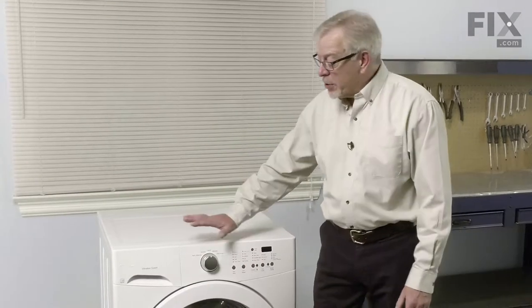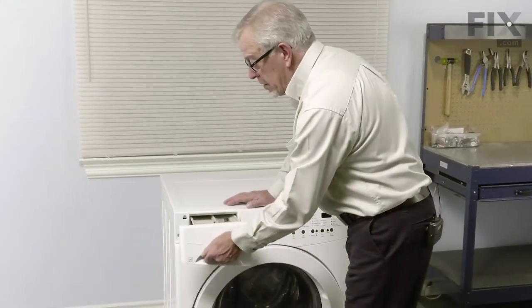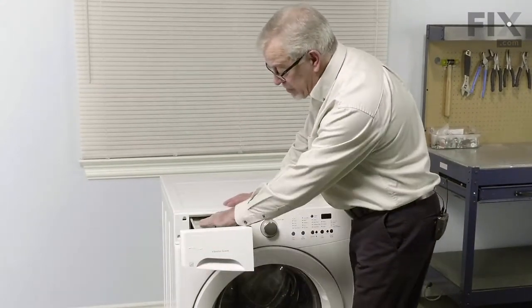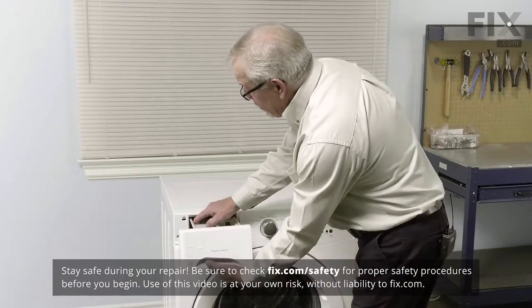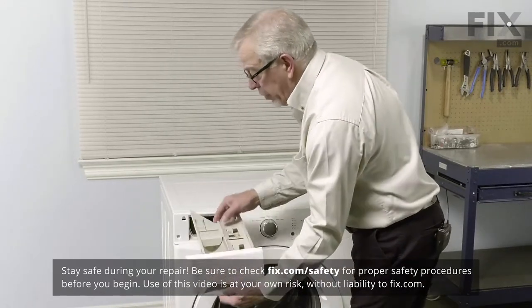Now to do this repair we're simply going to remove the dispenser drawer. Roll it all the way forward until it gets to the stop, and then reach in on the left hand side and press down on that tab, and then pull it out the rest of the way.